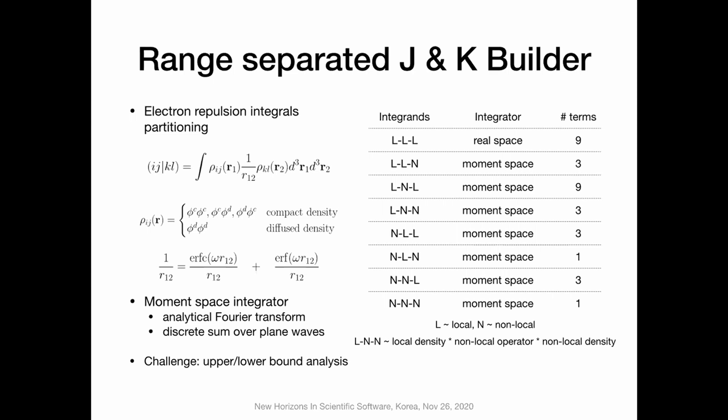The long-range part needs long-range real-space integration — it's smooth — and the long-range part is local in momentum space. So it's preferred to evaluate the long-range part in momentum space and the short-range part in real space. Overall, the electron repulsion integrals can be analyzed using eight types of combinations. For example, LL in the right panel means the local part in rho_ij plus the local part for the Coulomb operator (the ERFC short-range integral) plus the local part of rho_kl, evaluated in real space.